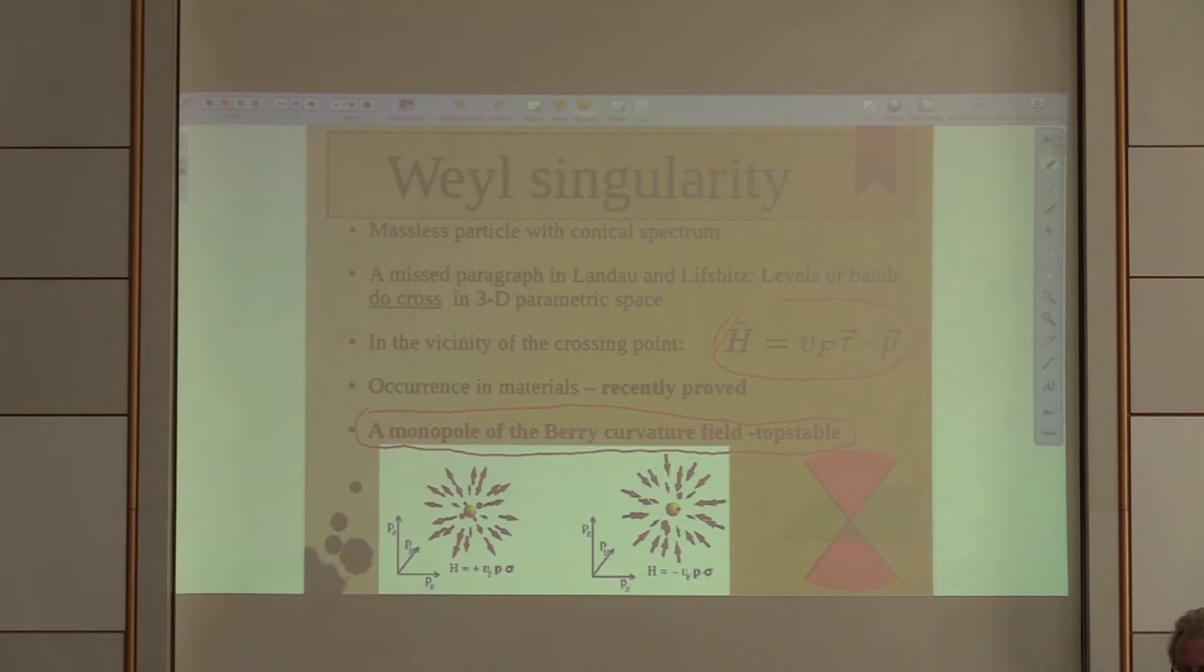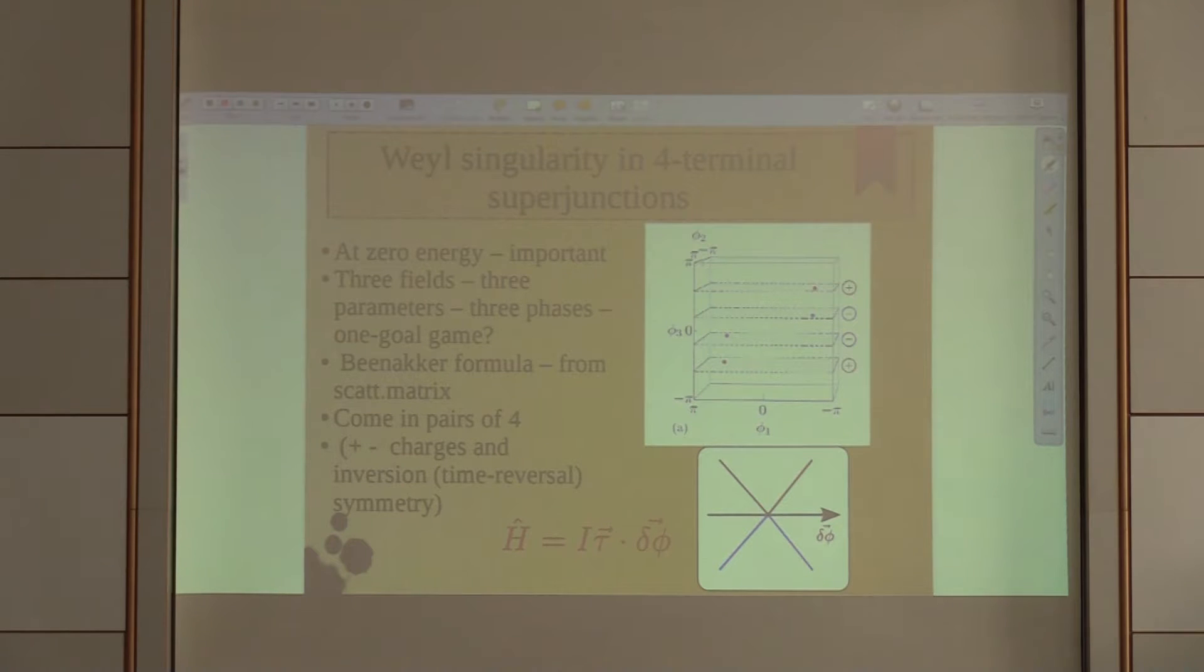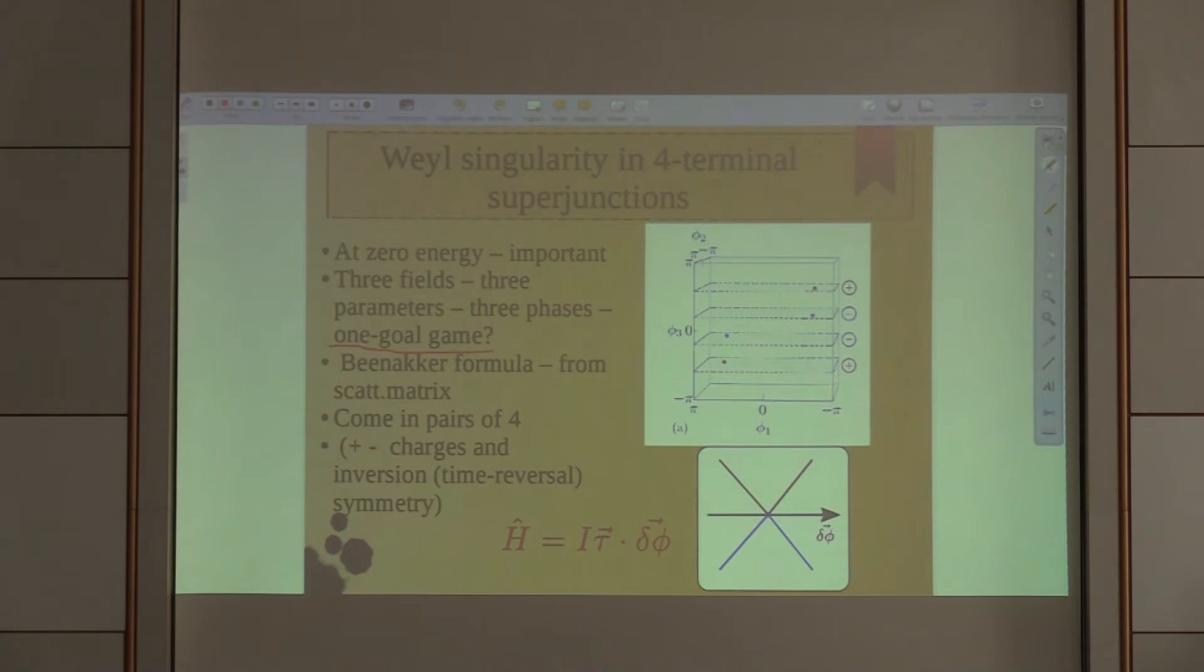Then what do we need in order to find Weyl singularities in four-terminal structures? We have three parameters to play with and we want to find crossings of the bands. It seems like a simple game. Three parameters, I just need to take a sufficiently random system with a random scattering matrix. Then with some luck I can have a singularity.